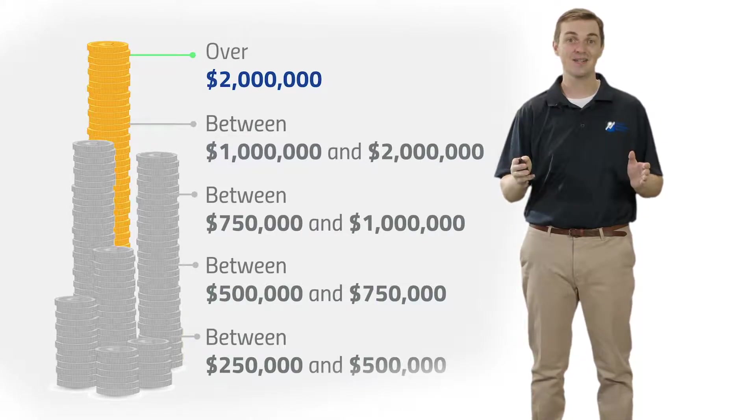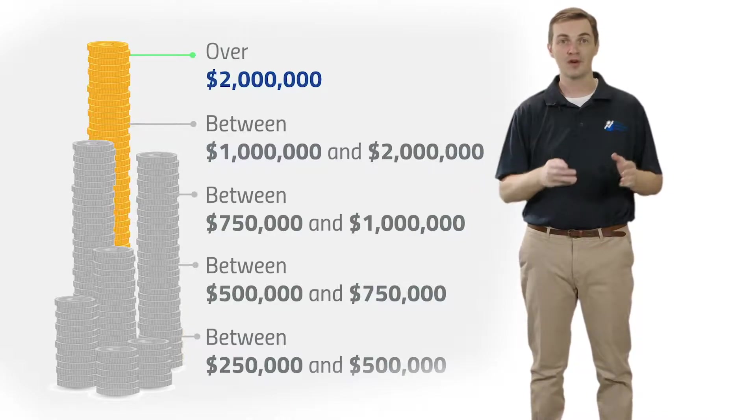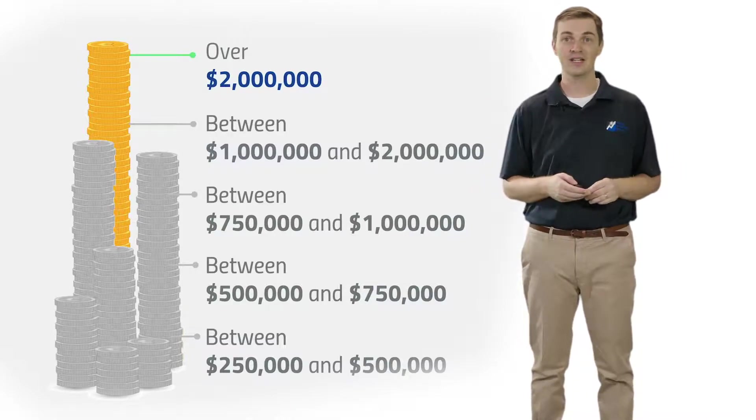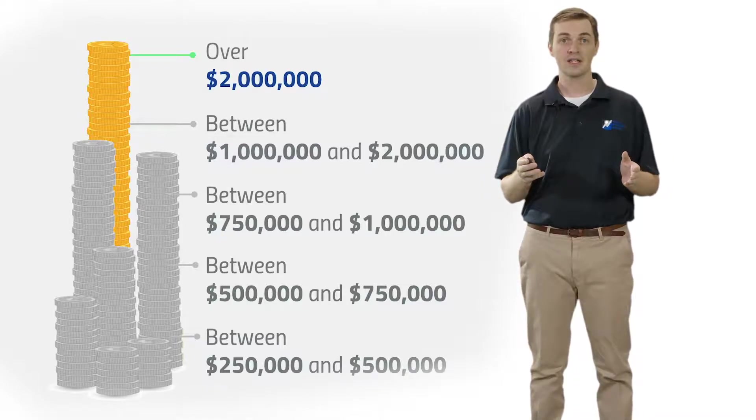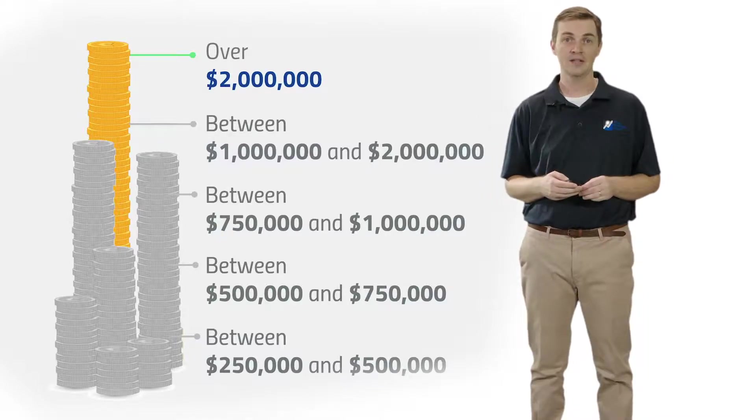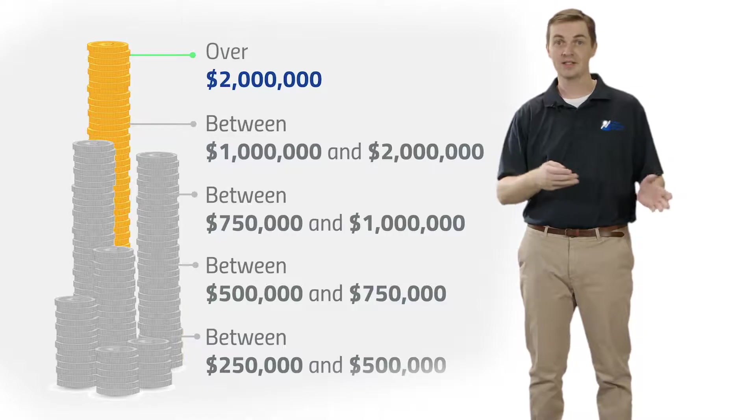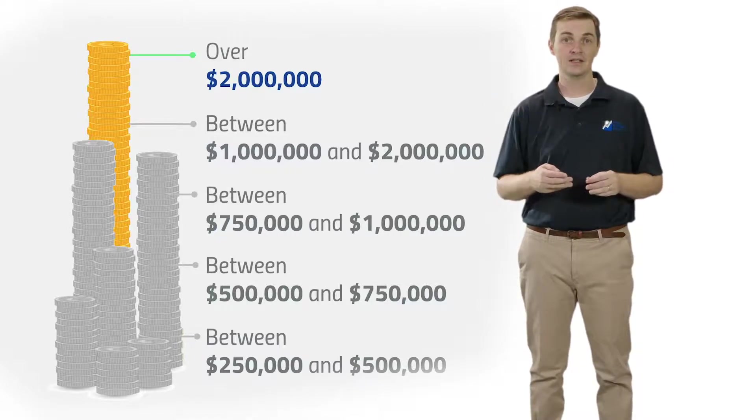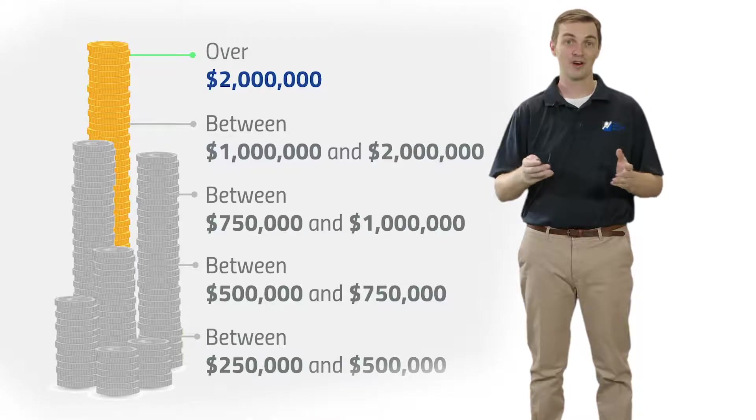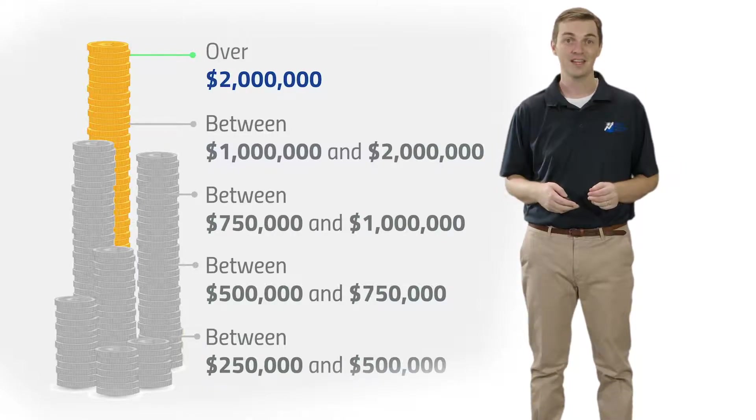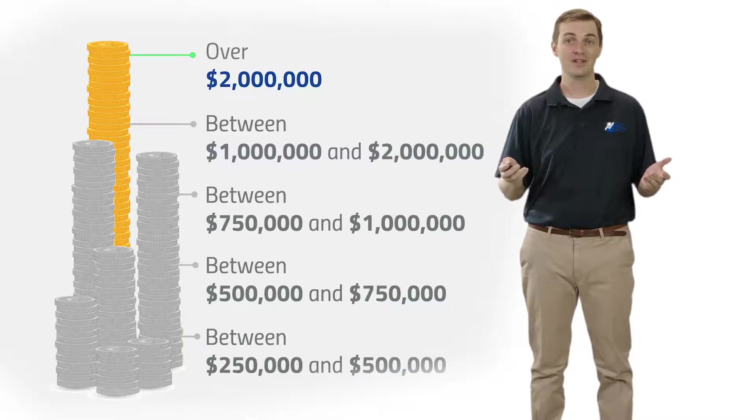Now I know this seems like a huge sum of money, and it is, and it requires saving and starting early, but $2 million to sustain a lifestyle is the normal amount that we need to save. Why is this number perhaps higher than you expected? There's lots of reasons. Think of the reasons why it could cost more to retire.